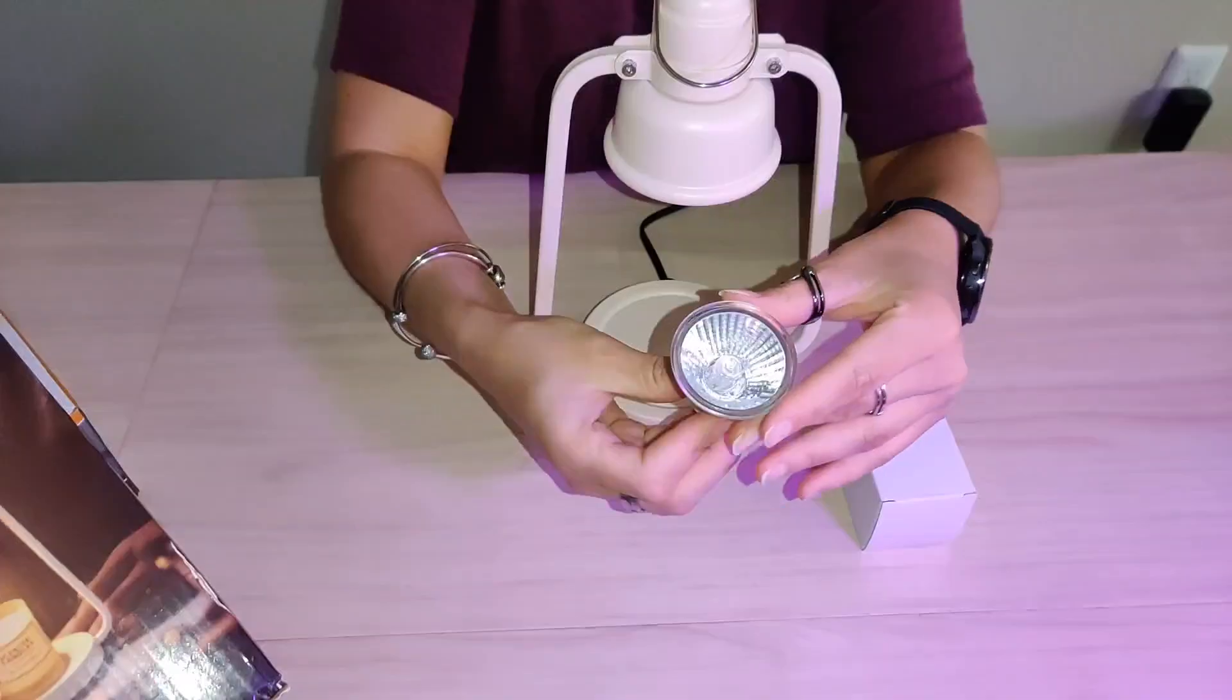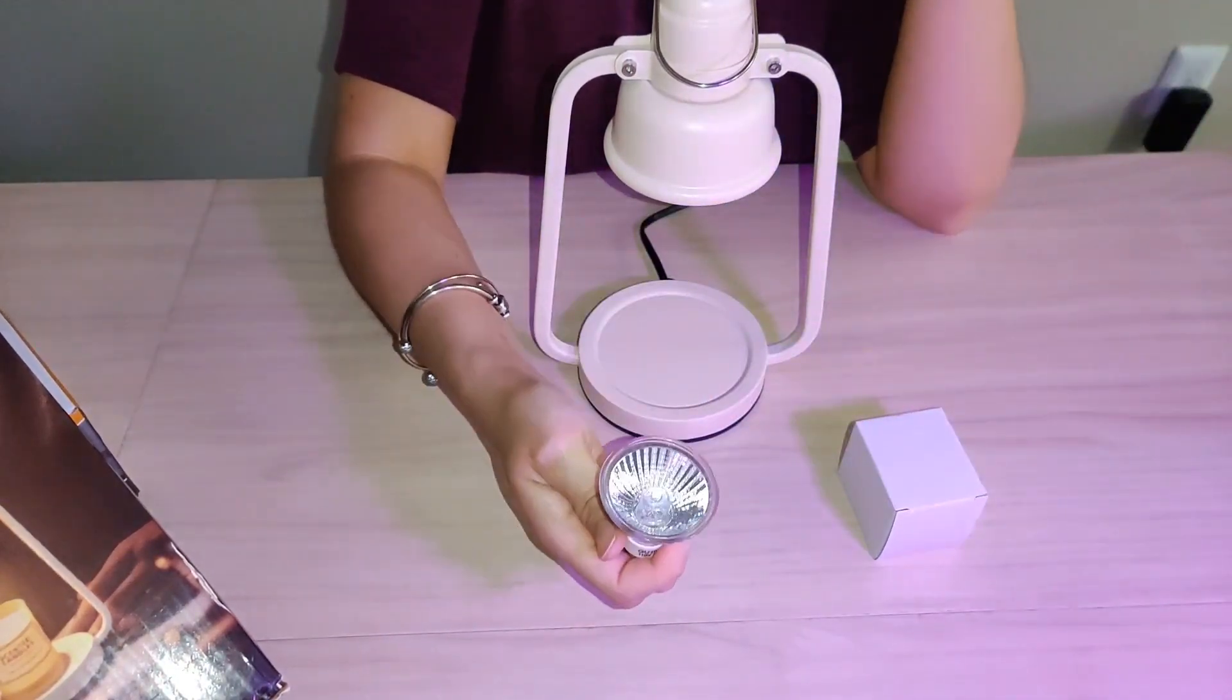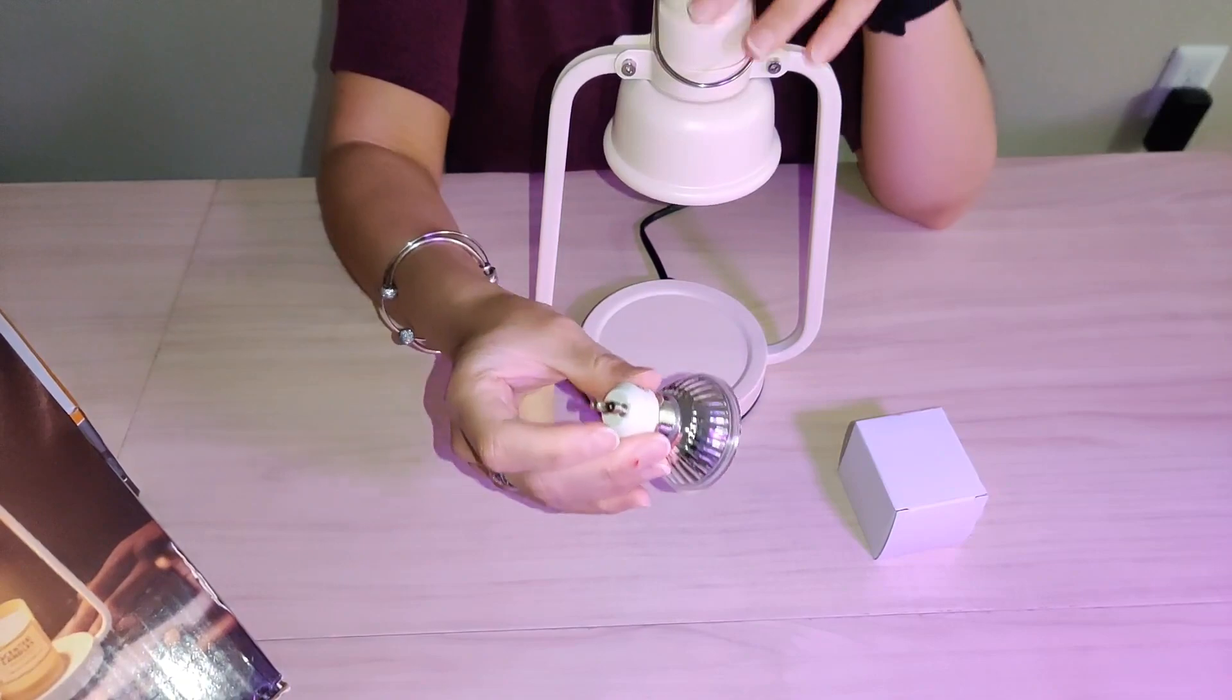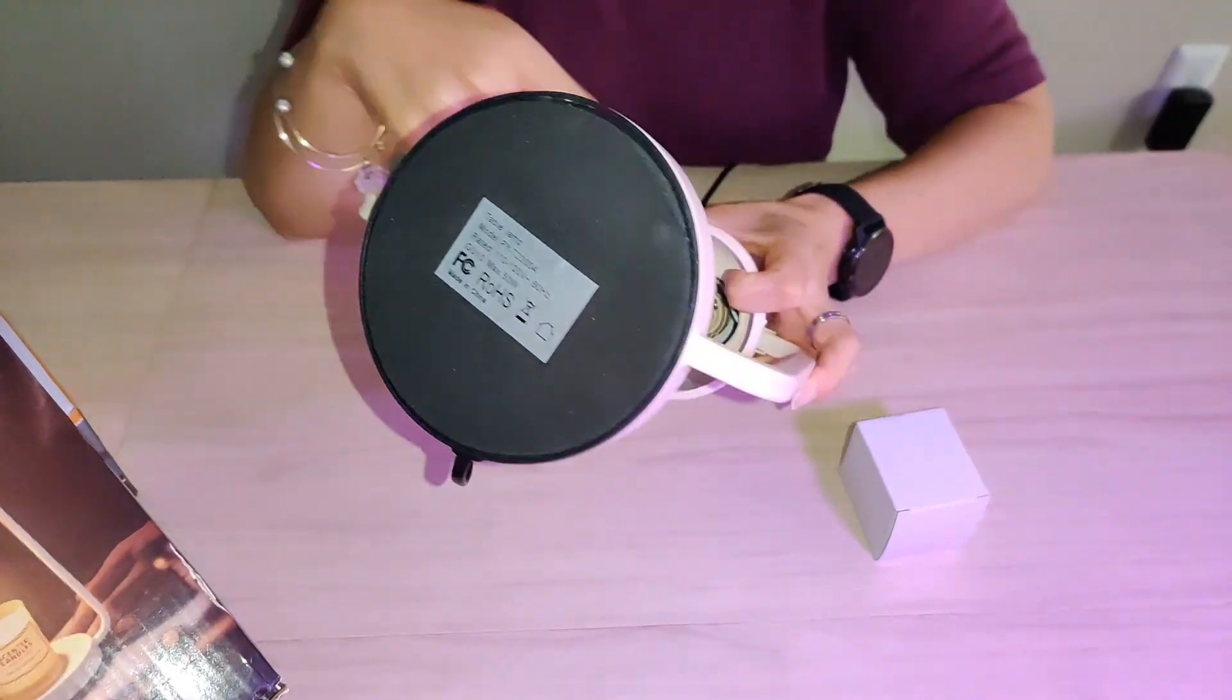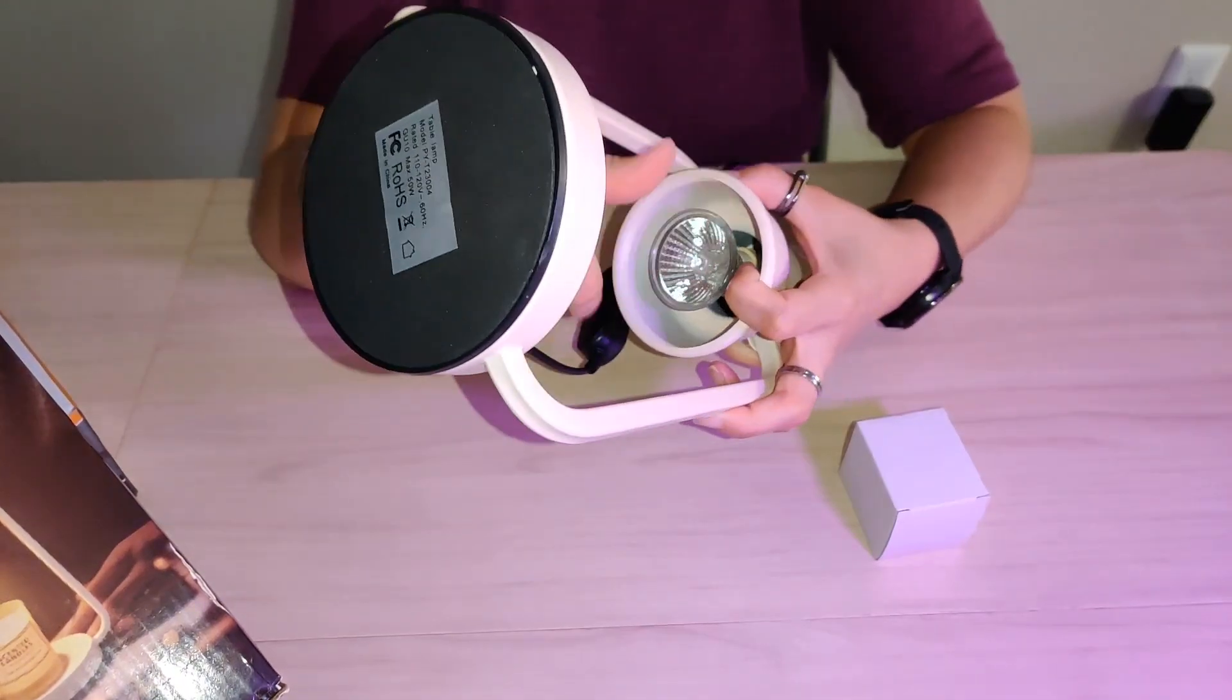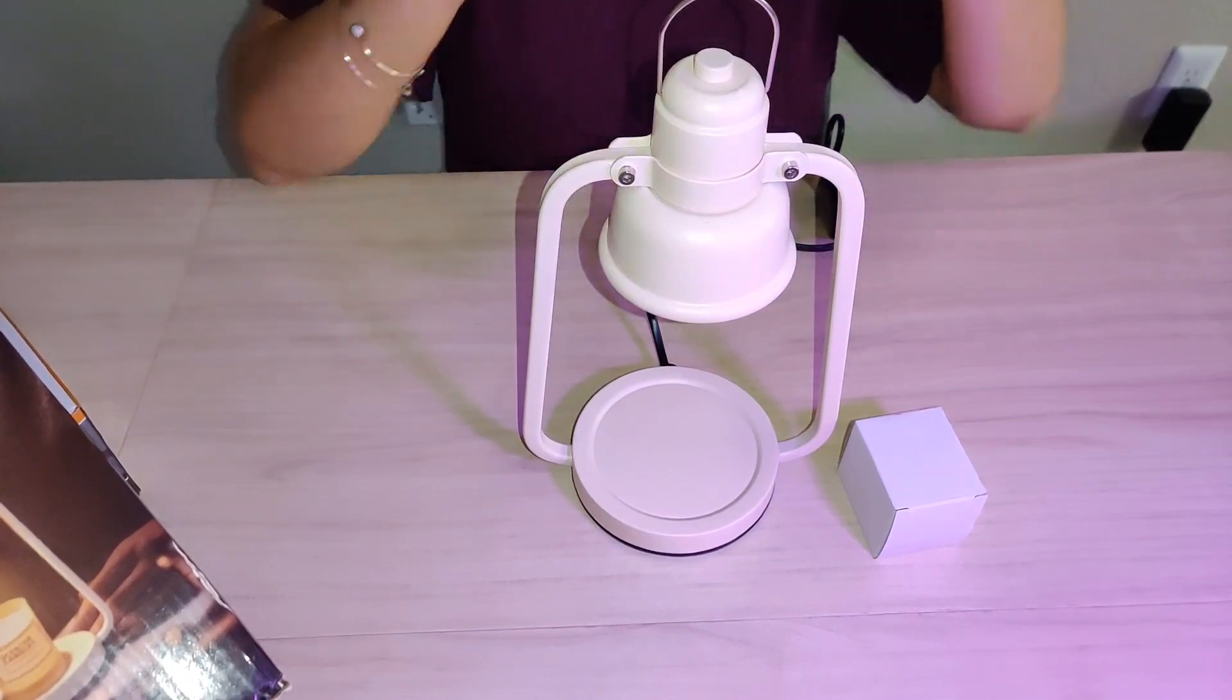It comes with two halogen lights. These are professional halogen lights. These are actually what we're going to use to put into this lantern. So to install it, it goes right inside here and into the slot, and then turn once to go ahead and lock it.